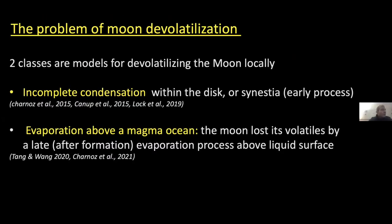Parallel to the mixing problem, there is the devolatilization problem. Two schools of thought exist: the first is incomplete condensation — where a very hot vapor cools down, and the most refractory elements condense first, creating a refractory-rich condensate phase. This has been studied by several authors including myself, Robin Canup, Lock, and Stewart. The second way is evaporation above a magma ocean.